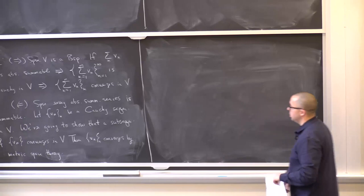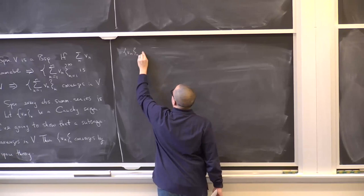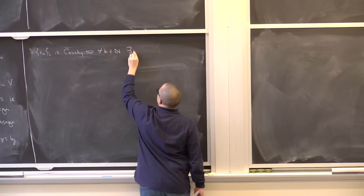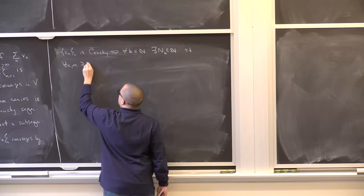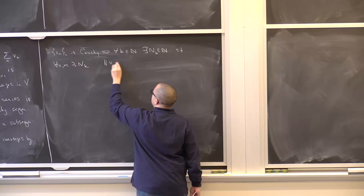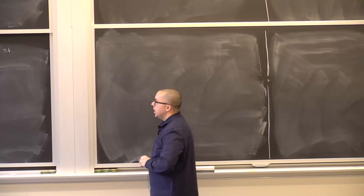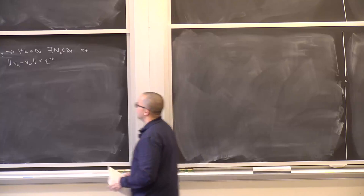We're going to build this subsequence by speeding up the Cauchy-ness of V_n. The fact that the sequence is Cauchy implies that for all k natural number, there exists a natural number N_k such that for all n, m ≥ N_k, we have the norm of V_n minus V_m is less than 2^{−k}. Why 2^{−k}? Because that's summable. We're going to build a telescoping sum from well-chosen elements. Define n_k to be equal to n_1 + N_k.